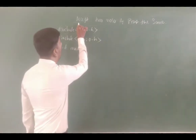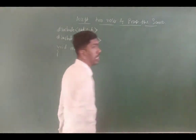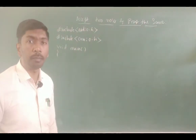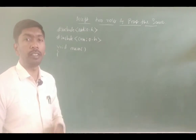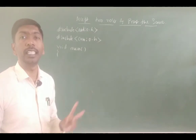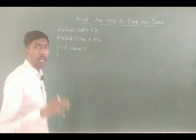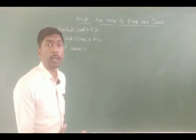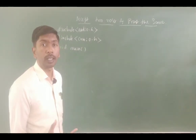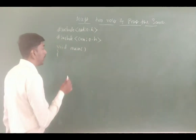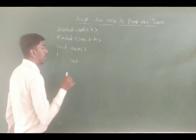The concept is: accept two numbers and print the same. The number means I am taking integers. There are integers — we have to accept and store values. We have to create the memory block. We use the int data type to create the memory block.